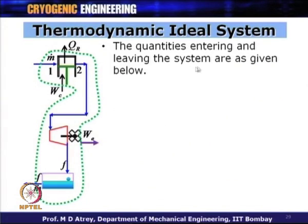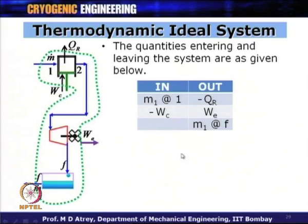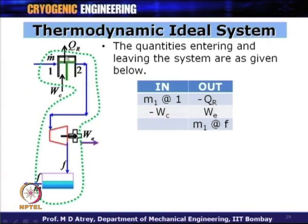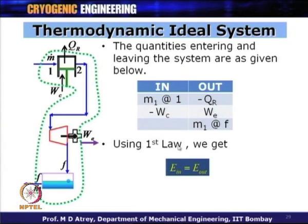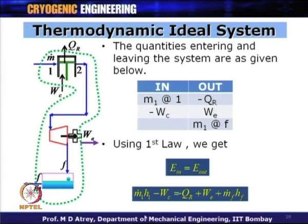The quantities entering the control volume are mass flow at point 1 (M_1 dot) and work of compression W_C. Leaving the control volume are heat of compression Q_R, work of expansion W_E, and liquefied mass M_F at point F with enthalpy H_F. Applying the first law: M_1 H_1 plus W_C equals Q_R plus W_E plus M_F H_F.